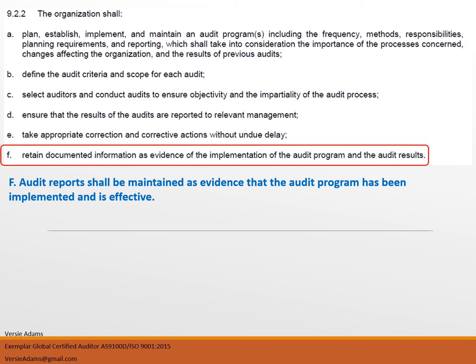AS 9.2.2(f) — retain documented information as evidence of the implementation of the audit program and the audit results. You must have audit reports maintained as evidence that the audit program has been implemented and is effective. When auditing your audit process and there are no documented audit reports, that means the audit program has not been implemented and is not effective. When conducting audits, make sure those reports are documented and maintained as evidence of the audit program. If it's not in writing, it doesn't exist.